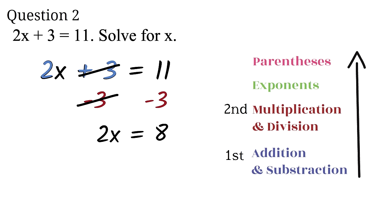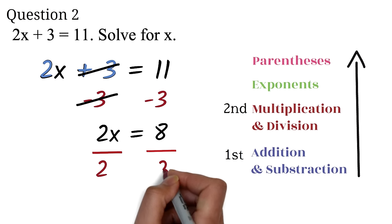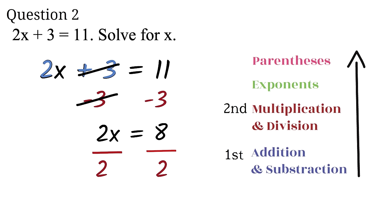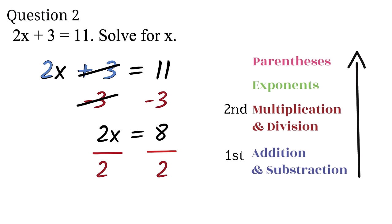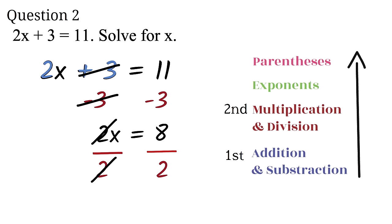Next, we will get rid of the multiplication by 2 by dividing both sides by 2, since division is the opposite of multiplication. The 2 will cancel out. 8 divided by 2 is 4. Therefore, x equals 4.